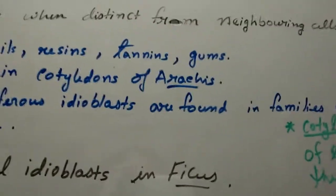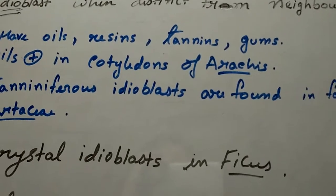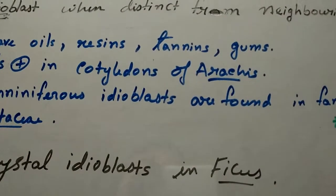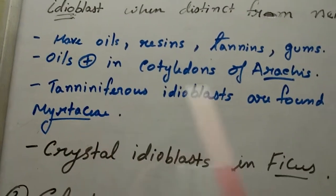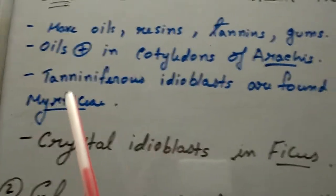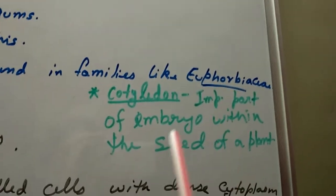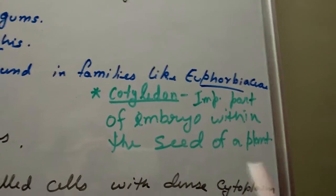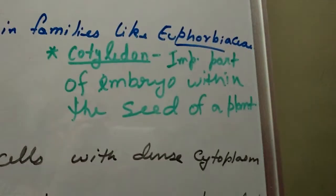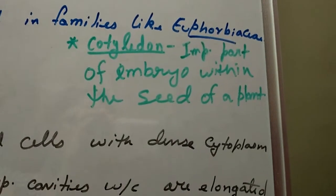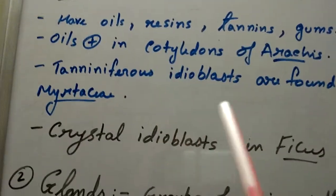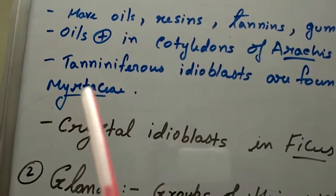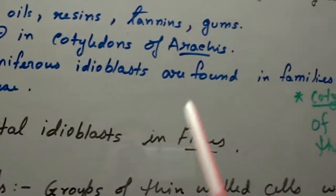We consume groundnut to get oil or to derive fatty acids from it. The main content of Arachis, or groundnut, is oil present in the cotyledons. Cotyledons are very important parts of the embryo within the seed of a plant, found in seed-bearing plants. So in Arachis, or groundnut, the cotyledons contain oils.